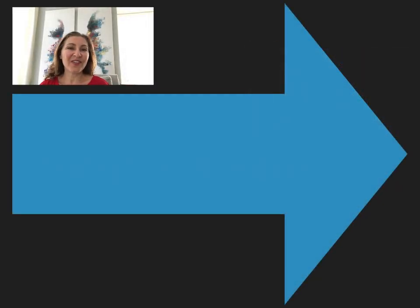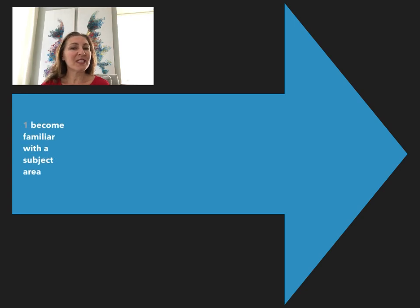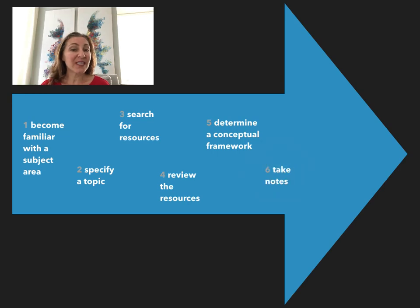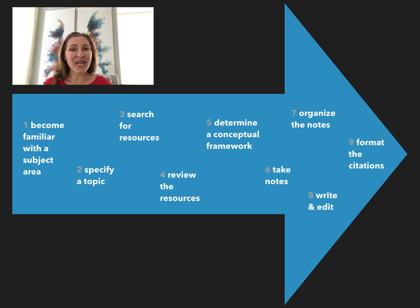Here's a preview of the nine steps: become familiar with a subject area, specify a topic, search for resources, review the resources, determine a conceptual framework, take notes, organize the notes, write and edit, and finally format the citations. So let's review them one at a time.